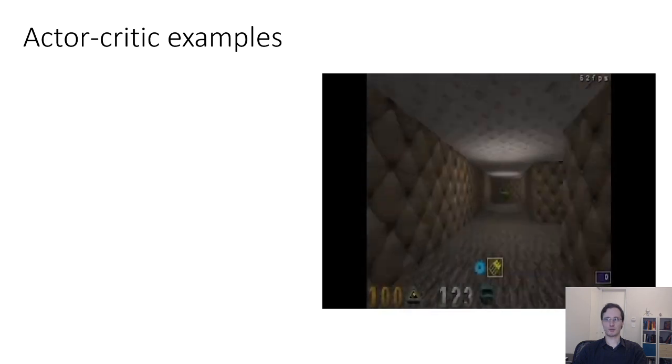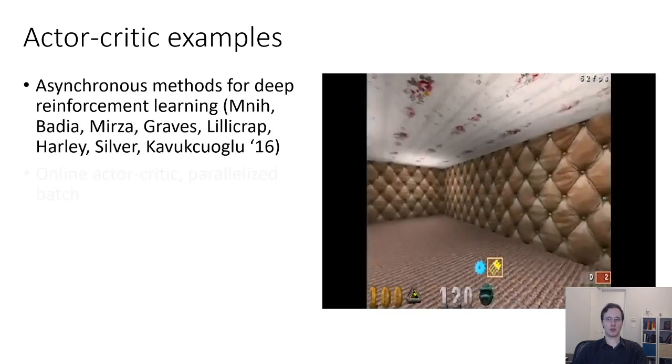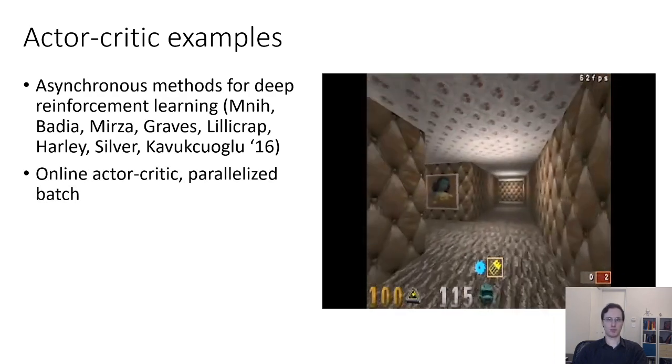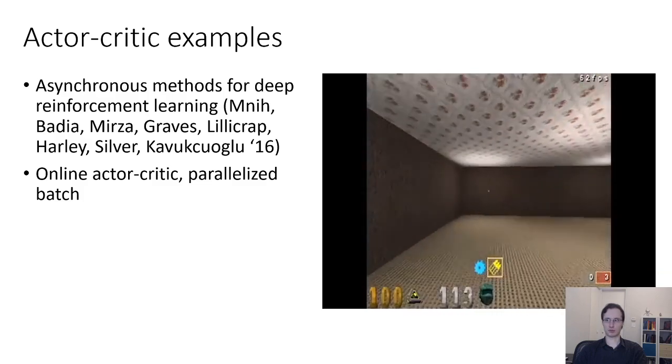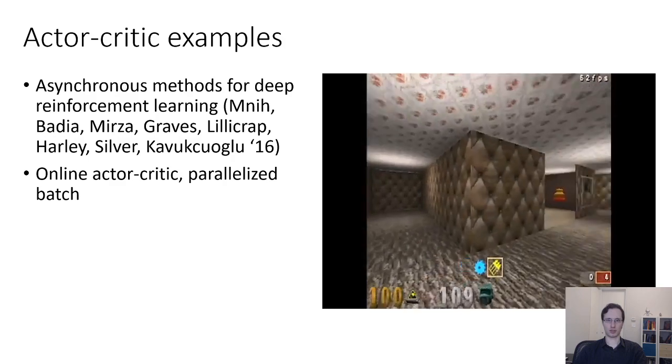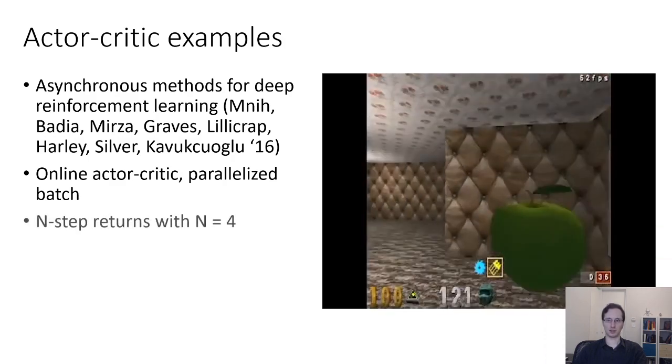Here's another example. This is from a paper called Asynchronous Methods for Deep Reinforcement Learning. And this paper focuses on online actor-critic algorithms using parallelized asynchronous systems. So in this particular video, they actually have an image-based actor-critic algorithm using a convent net and a recurrent neural network to navigate a maze.